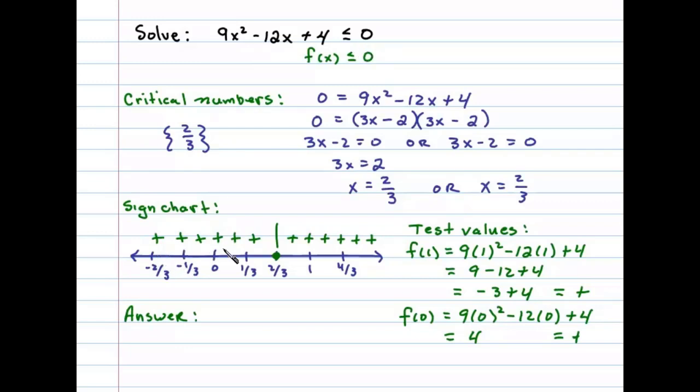From the sign chart we can see that it's really never negative, but it is equal to 0 at that one point there, the root. And so in this case, there's really only one answer, and that is 2/3.